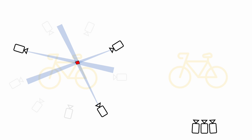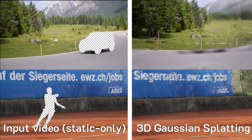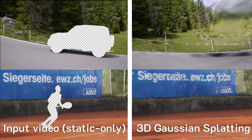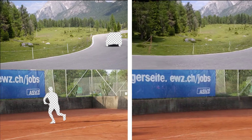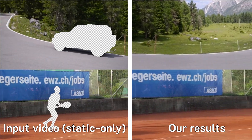Why is that an issue? Large viewpoint variations provide clear cues for 3D reconstruction. In contrast, limited viewpoint variations often lead to erroneous reconstruction due to ambiguity. As a result, state-of-the-art radiance field methods fail to reconstruct the static background in casual videos. In comparison, our method produces more plausible view synthesis results.